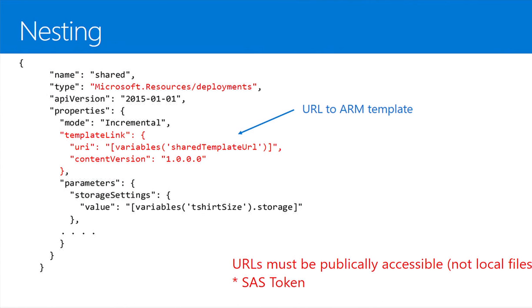When nesting different templates — you've decomposed into multiple templates — how do you invoke them? You use Microsoft.Resources/deployments, the resource provider responsible for handling deployments. It has an API version, and a mode of incremental or complete. Then a templateLink with the URI to a particular template and content version 1.0.0.0. Just like DSC configurations, these templates must be publicly accessible — which goes back to using a shared access signature and blob storage, or GitHub. It has to be HTTP or HTTPS.